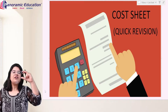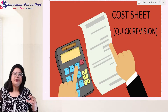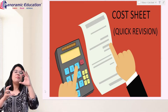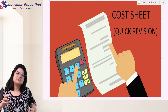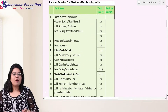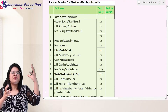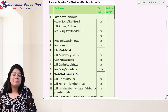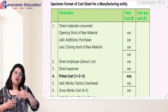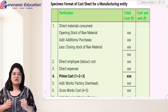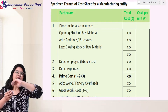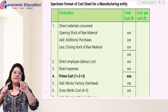Now, before we discuss each and every item individually, we will quickly go through the format so that when we discuss individual items, we will remember the format. If you remember the format: first of all, we identify our prime cost, and prime cost is basically the sum total of direct material, direct labor, and direct expenses. In totality, we call this prime cost.